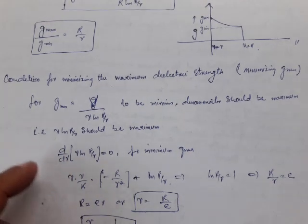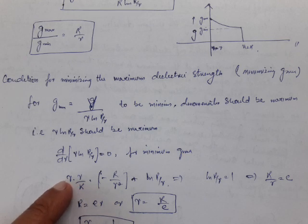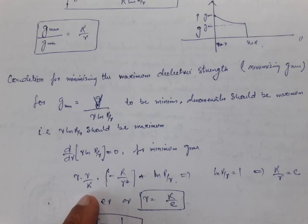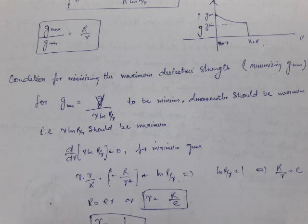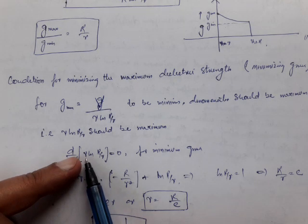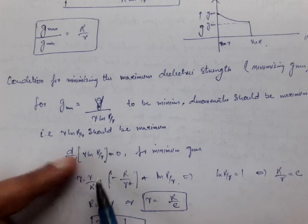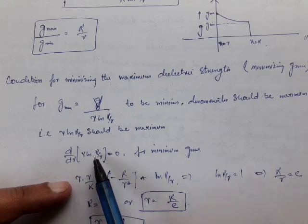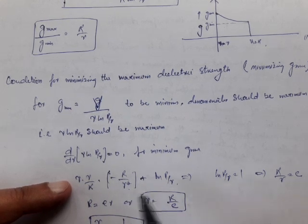Differentiating and equating to zero for minimum G_max, using the UV rule: we keep r as is and differentiate ln(R/r) — the derivative is r/R — then differentiate 1/R which gives minus 1/R squared. After simplification, the terms cancel, giving ln(R/r) equals 1.